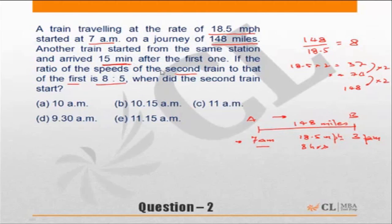That means it would have arrived at 3:15 PM. What time did it start? Speed of train 1 to train 2 - the ratio of the second train to the first train speed is 8 is to 5. This is the ratio of the speeds.